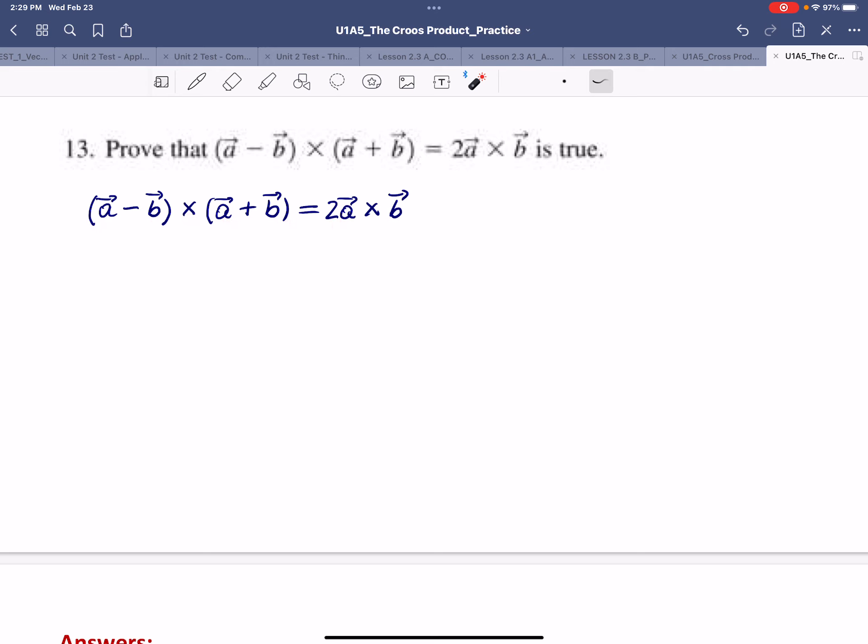Let's take a look at how we can simplify the left side first. So the left side is A minus B crossing A plus B. The way that we multiply this is we're going to first take the vector A, multiply or cross with A minus B.